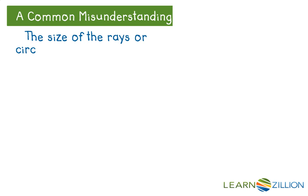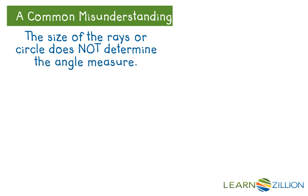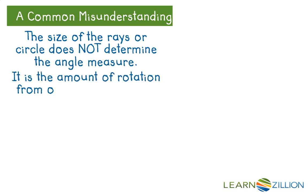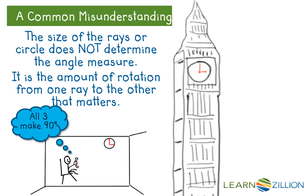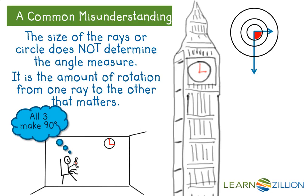A common misunderstanding when measuring angles is to worry about the size of the rays or circle where the angles are formed. The angle opening is what is important. It doesn't matter whether you are looking at the hands of a watch, classroom clock, or Big Ben in England. If the clock says 3 o'clock, the angle formed is 90 degrees. How long the rays are does not change the angle opening.